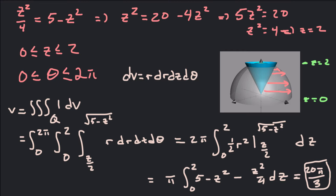If we had integrated z first, it would present more of a challenge because the upper bound for z changes at a particular radius. For some r values we'd go from 0 to the cone, and for other r values from that radius out to square root of 5 we'd use the sphere as the upper bound — requiring two separate triple integrals.